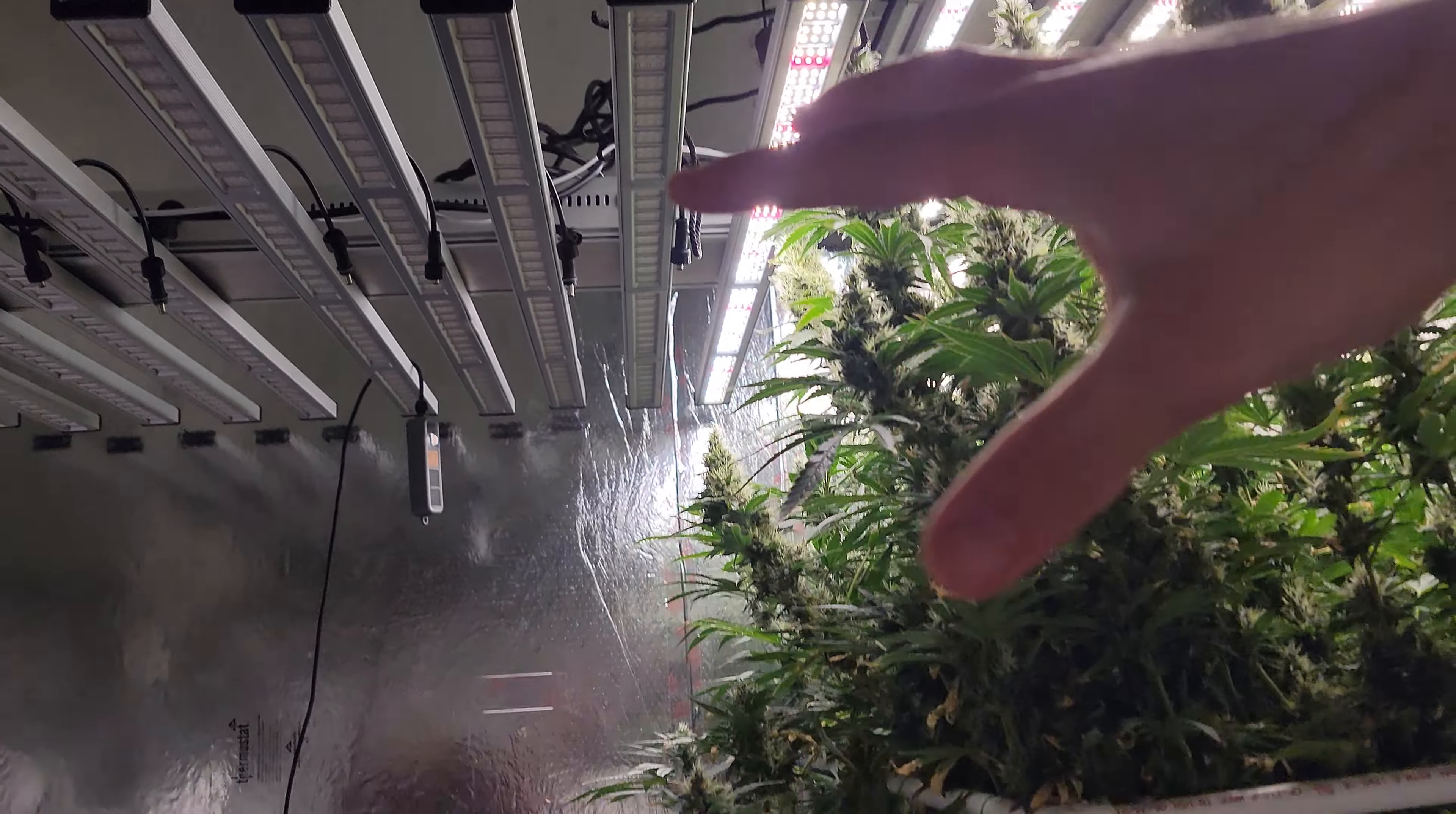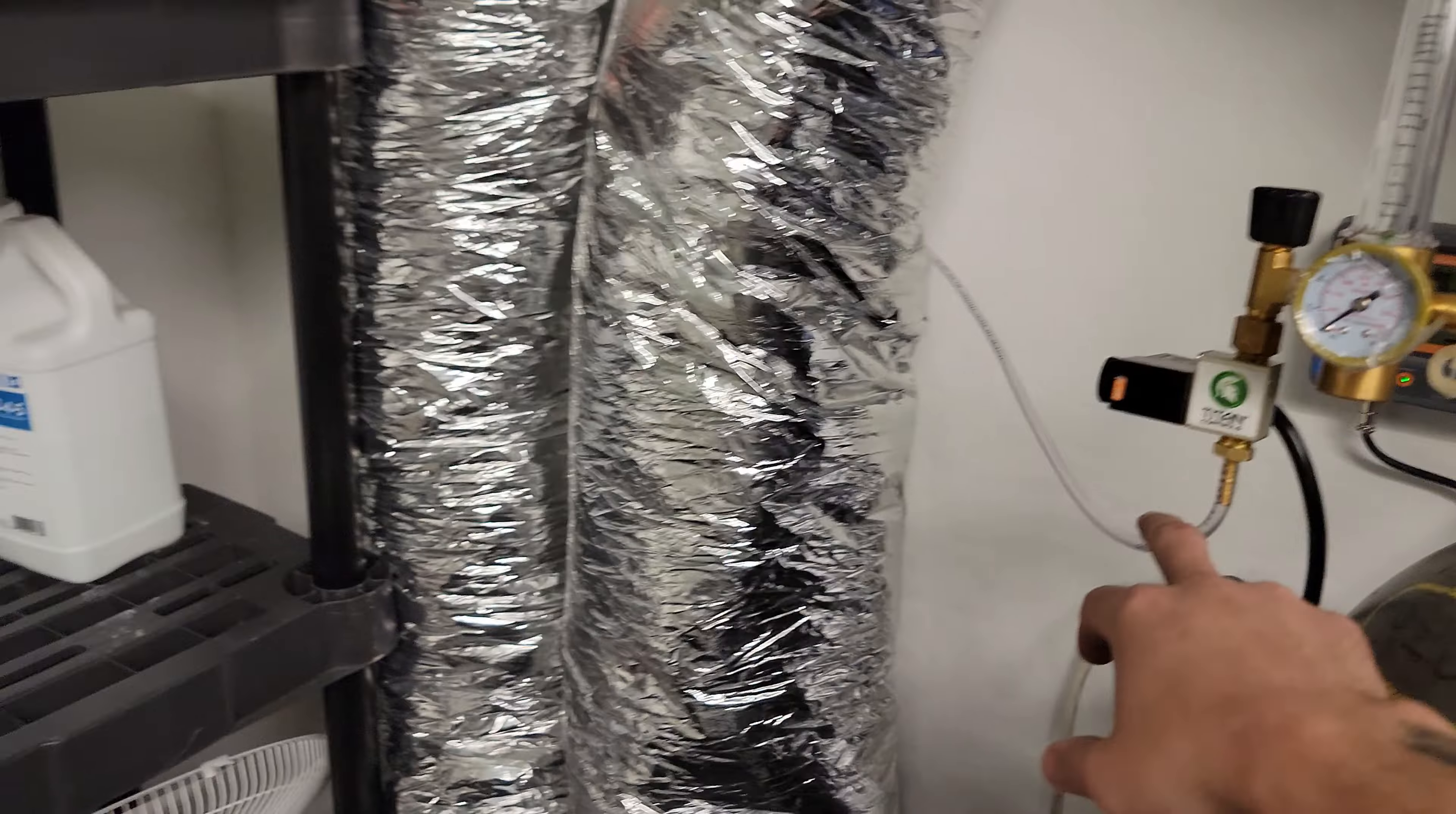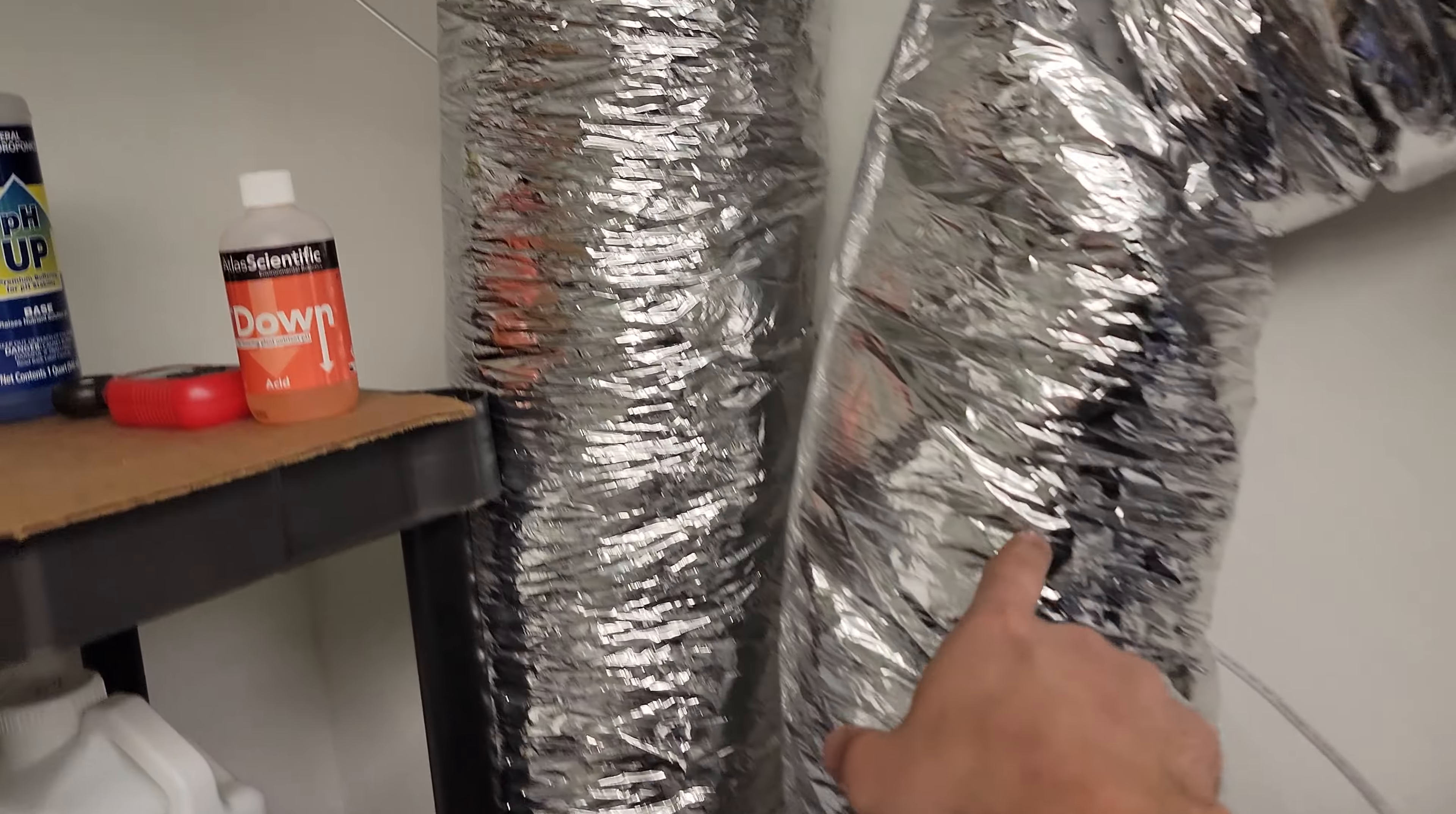If you have a big room, you might want to have like a porous hose or hose with holes in it and zigzag it across your roof so that way it falls down over your plants, because CO2 is heavier than air.